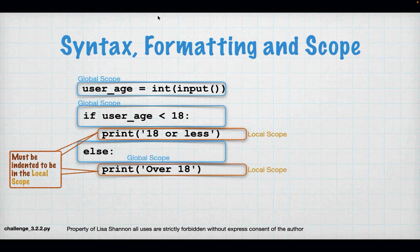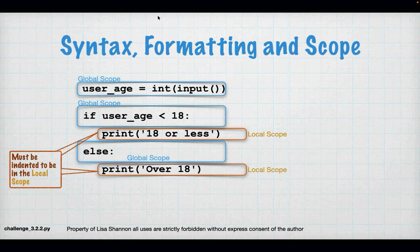However, you will see that there are two print statements. Both print statements are in the local scope, but different local scopes — there's a local scope under the if, and there's a local scope under the else. Python requires a local scope under an if or else, otherwise you'll get a syntax error. If userAge less than 18 evaluates to true, I will print '18 or less' and the program ends — it doesn't care about the else at that point.